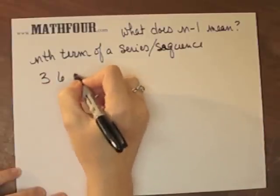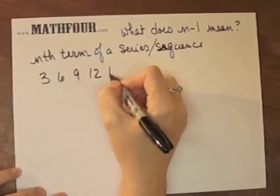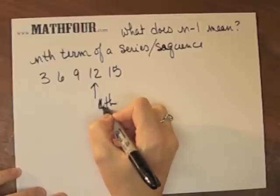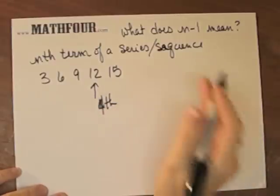So if we're talking about 3, 6, 9, 12, 15, so this is the fourth term. Wow, that's a terrible four. Fourth term.